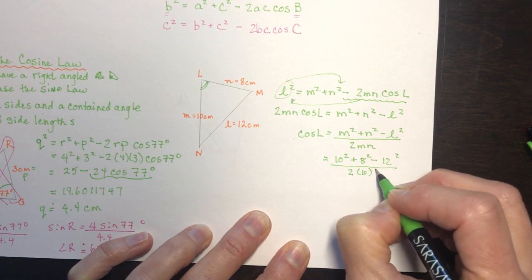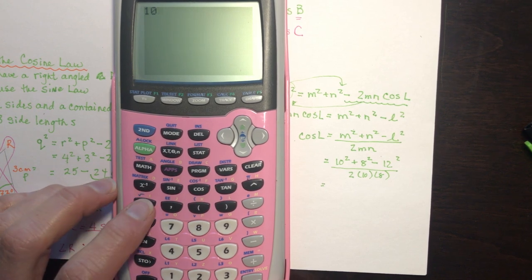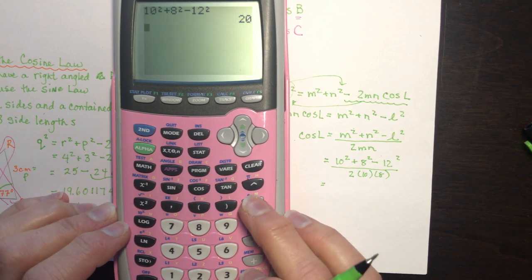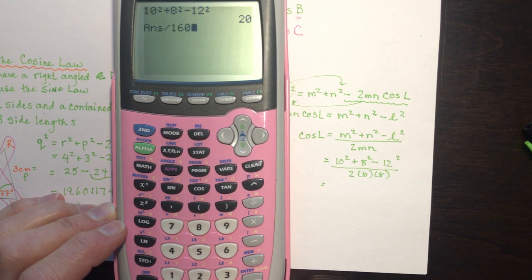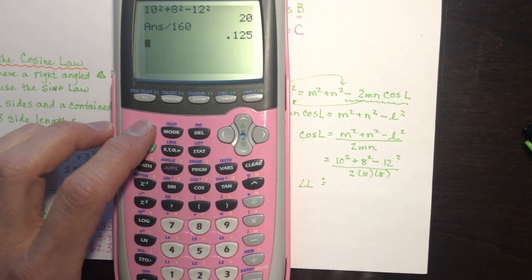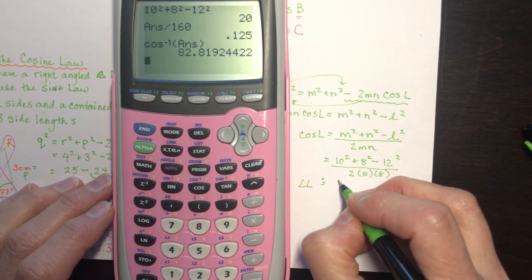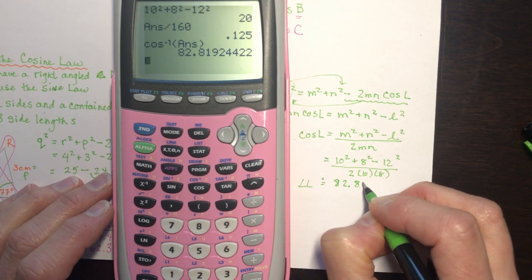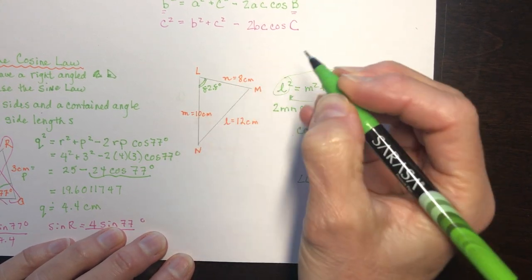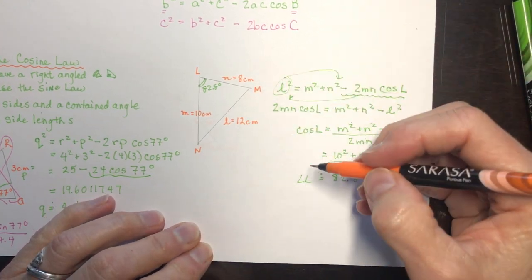Computing: 10 squared plus 8 squared minus 12 squared equals 20, divided by 160. Taking inverse cosine of that ratio gives approximately 82.8 degrees for angle L. From here, you can use the sine law to find the remaining angles — you only needed the cosine law once.